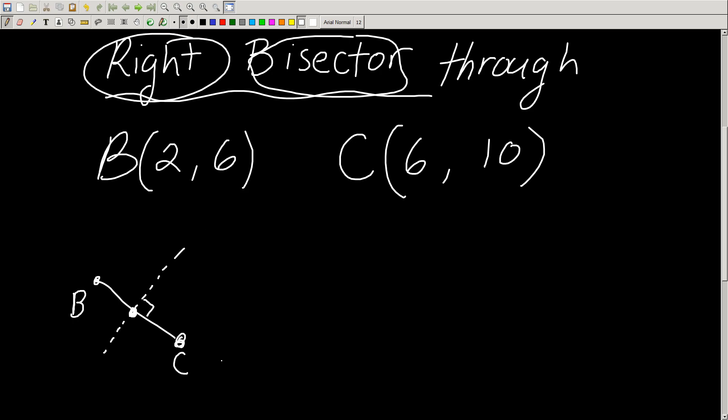And what equation does a line have? You might say y equals mx plus b. Now remember, these two points are not exact, so it's not 2, 6, 6, 10 here.